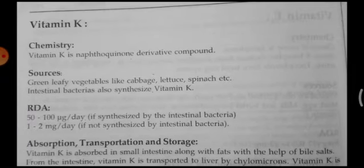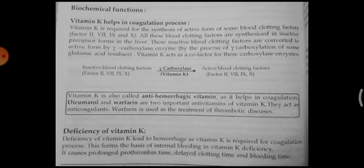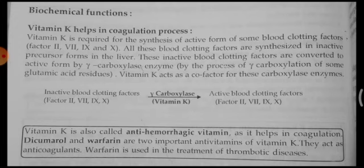Vitamin K is involved in coagulation. Vitamin K is required for the synthesis of active forms of some blood clotting factors. When you come across the blood clotting mechanism, several factors — Factor 2, 7, 9, and 10 — are synthesized with the help of Vitamin K. All these blood clotting factors are synthesized in inactive or precursor form in the liver. These inactive blood clotting factors are converted to active form by the alpha-carboxylase enzyme, which requires Vitamin K as a cofactor.